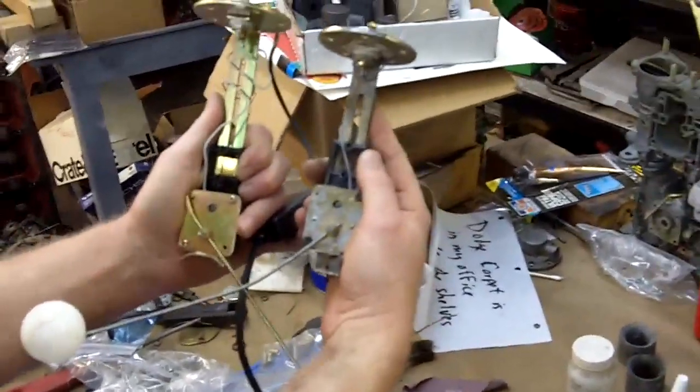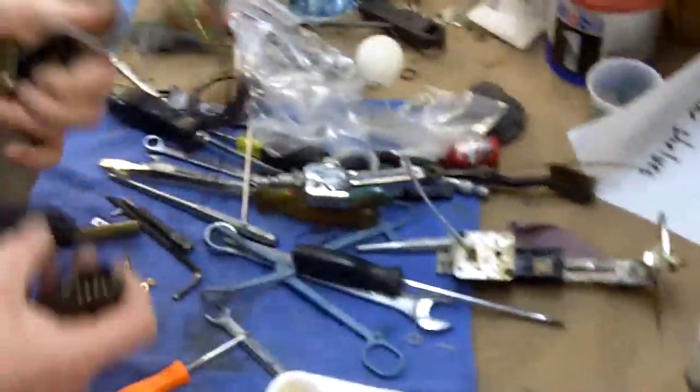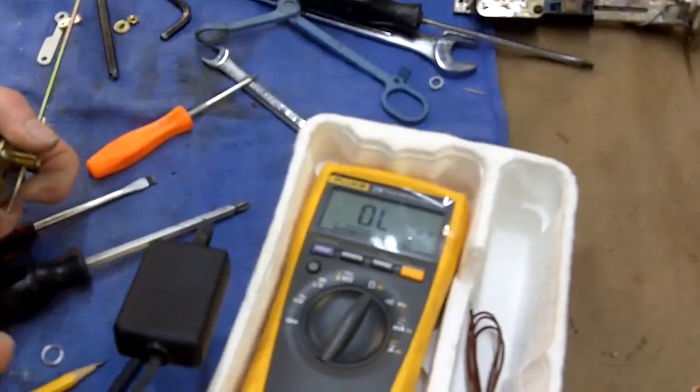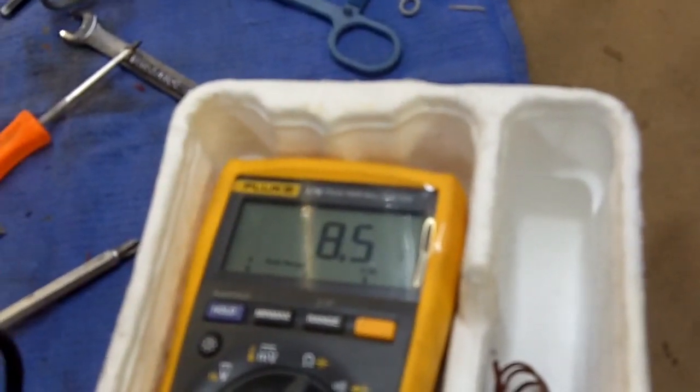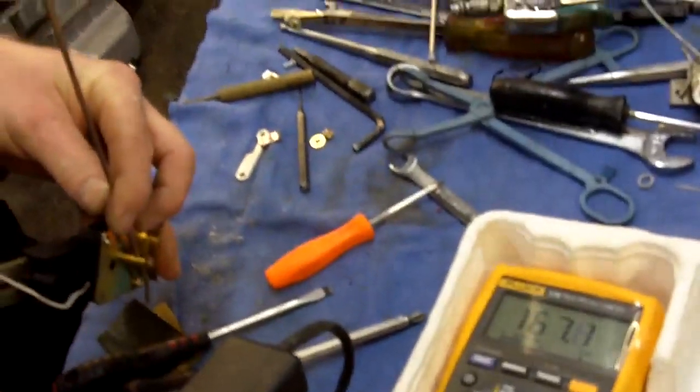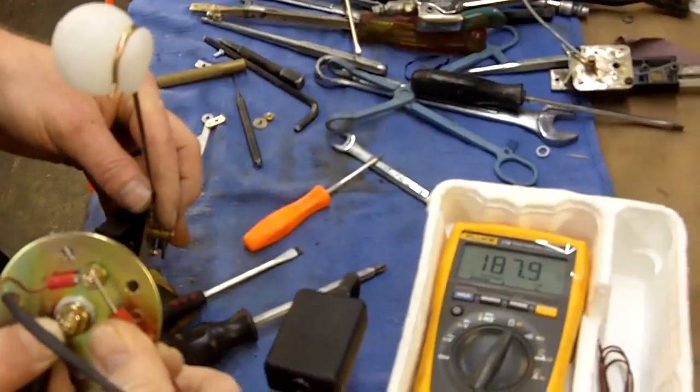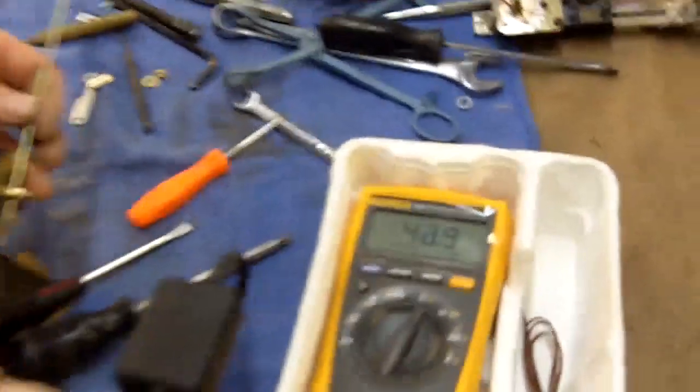If we take our ohmmeter and set it to ohms, and my able-bodied assistant here works with me, we start out with an empty fuel tank at roughly 8.5 ohms, which is effectively zero. And as we move through the fuel range up to the top, we end up with a maximum of 187-188 ohms, which usually indicates a 190 ohm unit range.